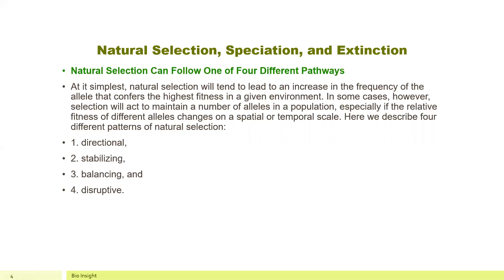Let's start with Natural Selection. We have three things connected in evolution: Natural Selection, Speciation, and Extinction. These three things are connected — in evolution, there are three steps: Natural Selection, Speciation, and Extinction.